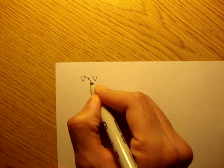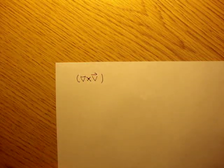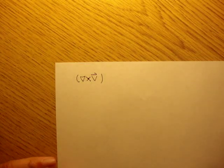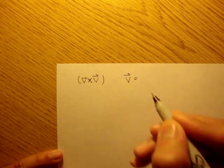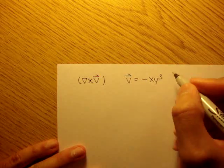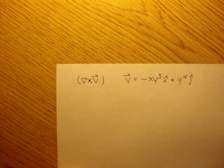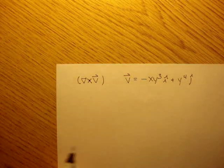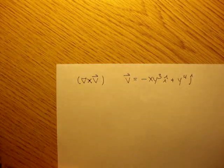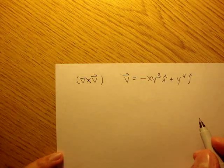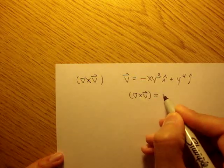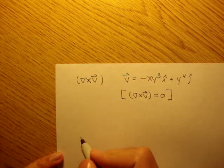We're going to continue doing another example of fluid kinematics. This time we'll talk about vorticity. Vorticity is the del operator crossed with the velocity vector, or the velocity flow field. For a flow field to be irrotational, del cross v must be equal to zero. That is the definition of irrotational flow.